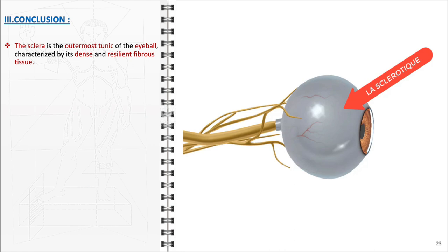In conclusion, the sclera stands as the outermost layer among the tunics of the eyeball, forming a critical component of the eye's anatomy. Composed of dense and resilient fibrous tissue, the sclera is designed to endure and provide structural integrity to the eye.